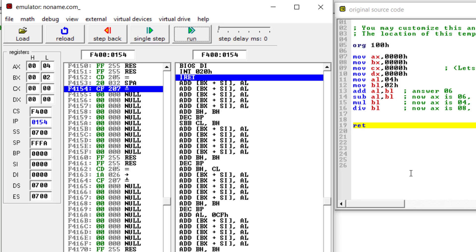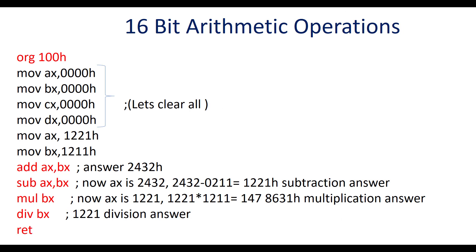Now we'll see the 16-bit instruction. For 16-bit operations, instead of 8-bit data we use 16-bit data. Everything else remains the same. We replace AL with AX and BL with BX, since we are using 16-bit registers. Using AX allows you to enter either 8-bit or 16-bit data. Let's run this simulation and see the results.